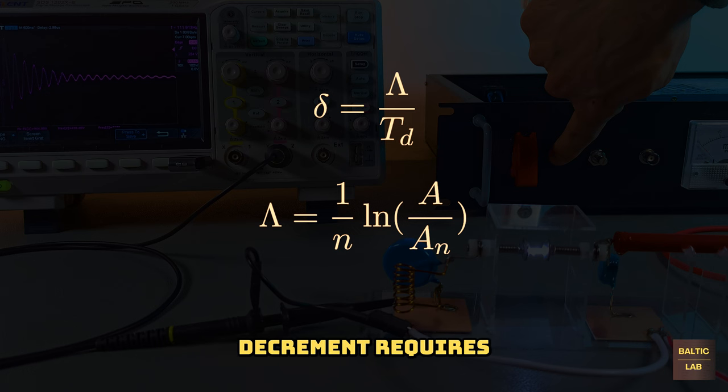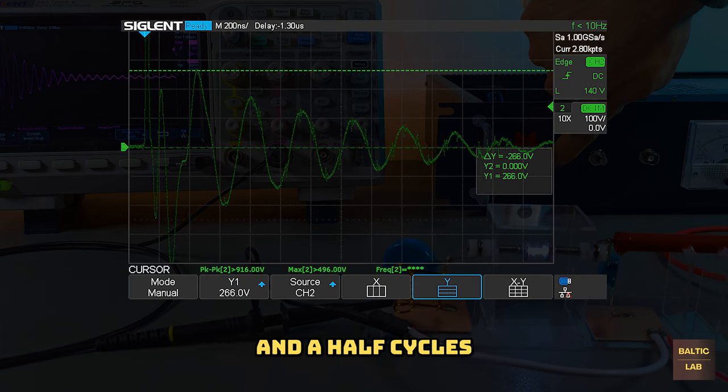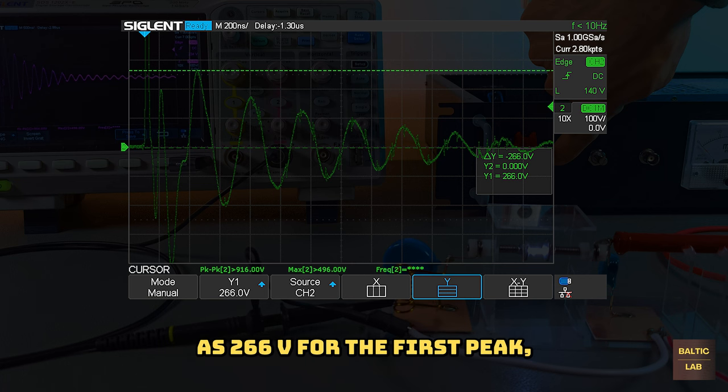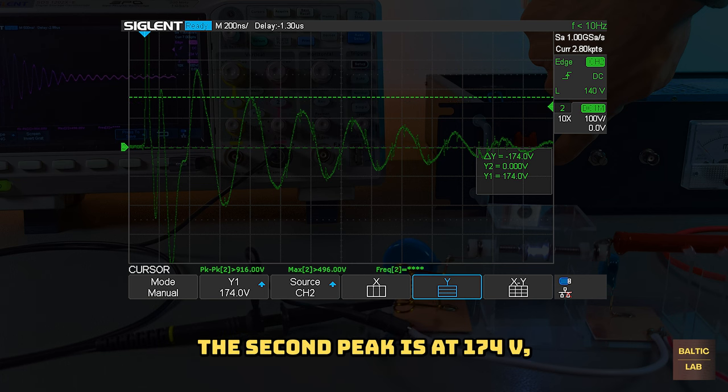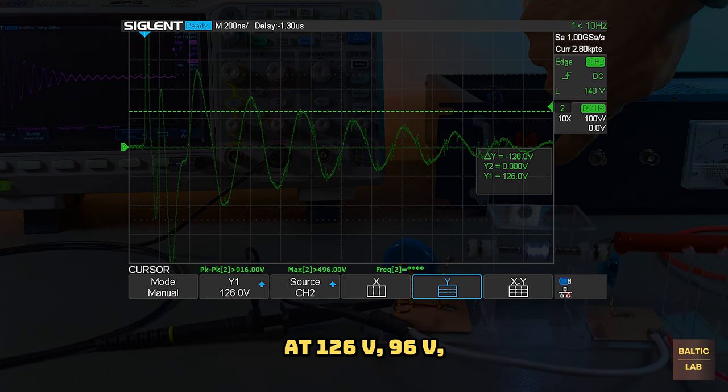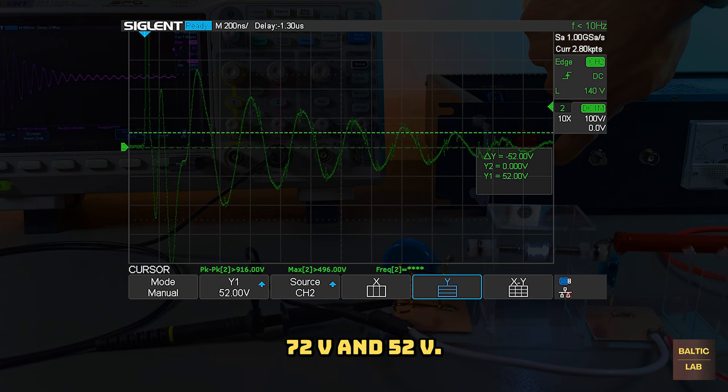Calculating the logarithmic decrement requires noting the amplitudes a of n successive oscillations. Ignoring the first one and a half cycles of the output signal for reasons I'll get into later, the amplitudes are noted down as 266 volts for the first peak, the second peak is at 174 volts, and the consequent peaks are at 126 volts, 96 volts, 72 volts, and 52 volts.